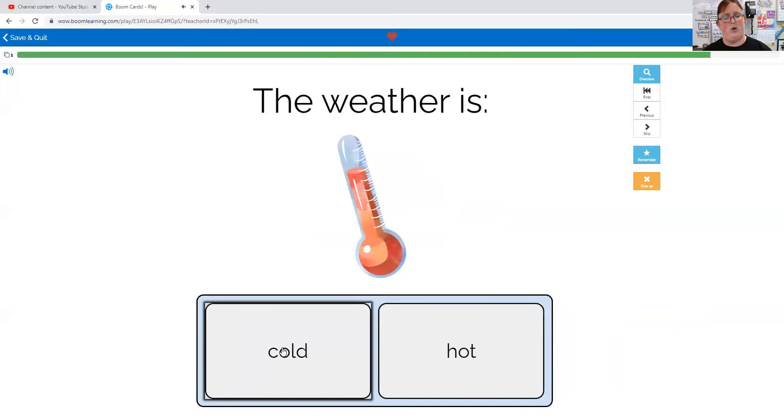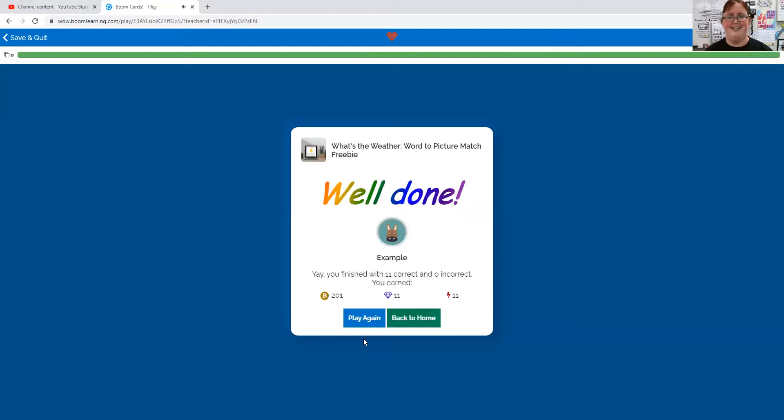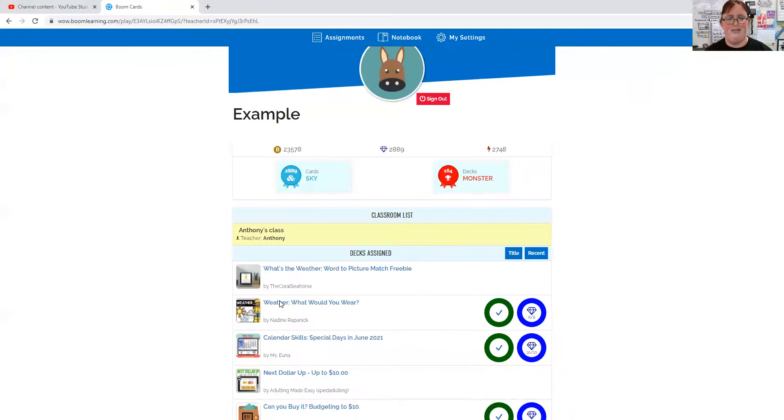The weather is cold or hot. Remember we talked about our old-fashioned thermometer and how the mercury would rise? Well, this is much higher, and it's red, so it's hot. All right, awesome job. Let's do this one.